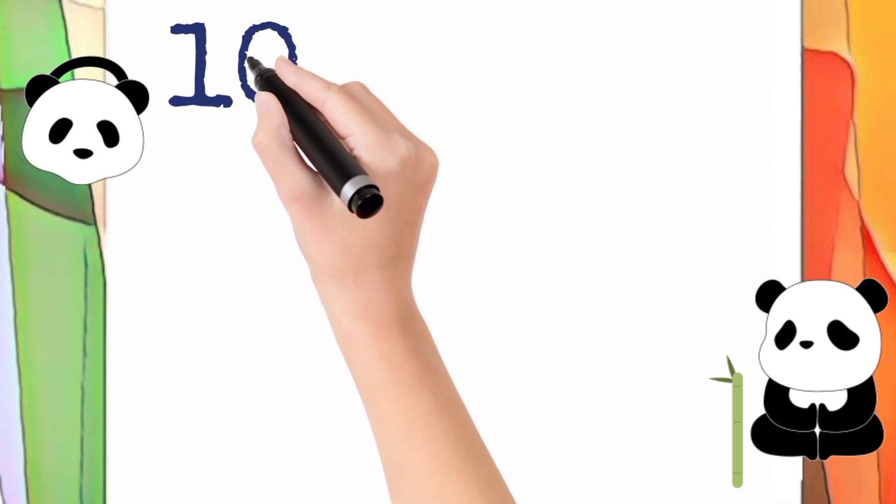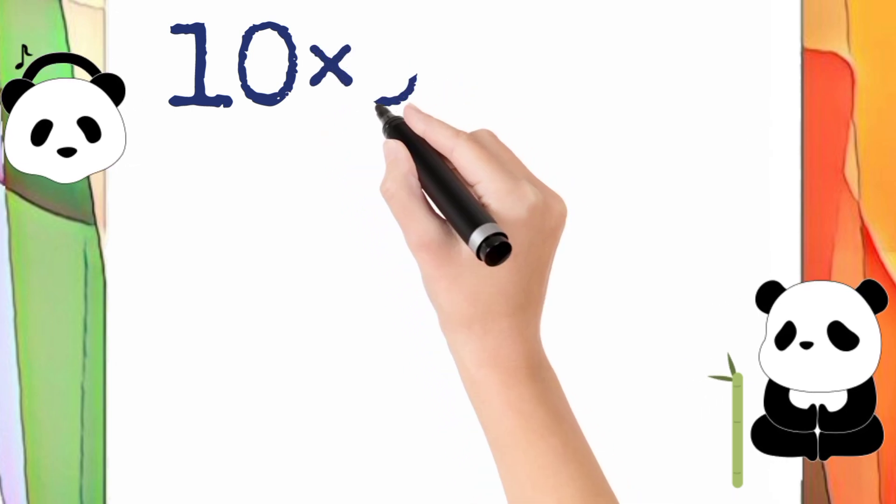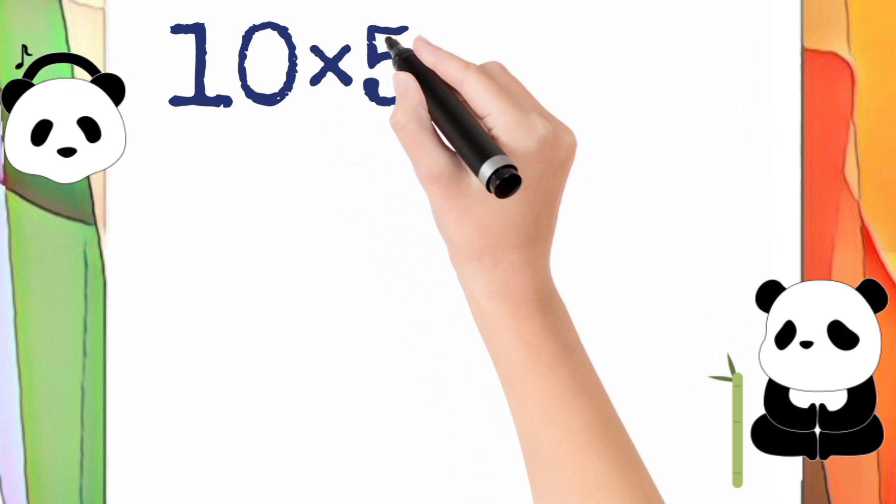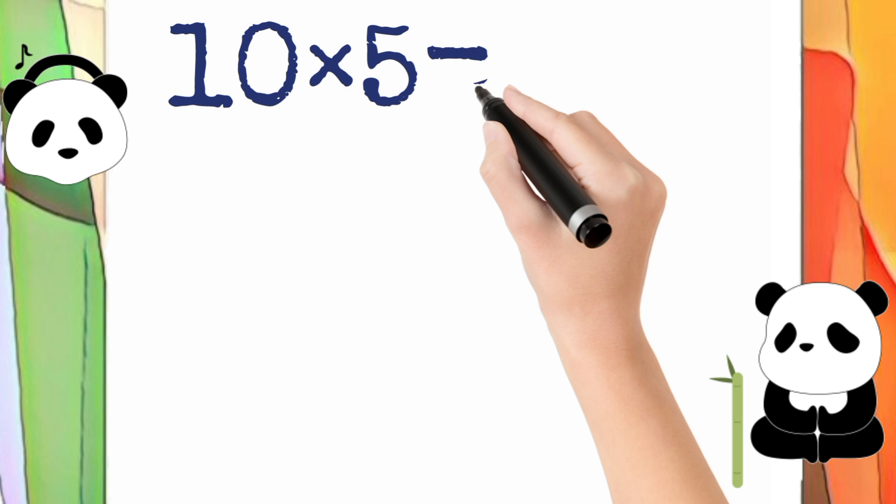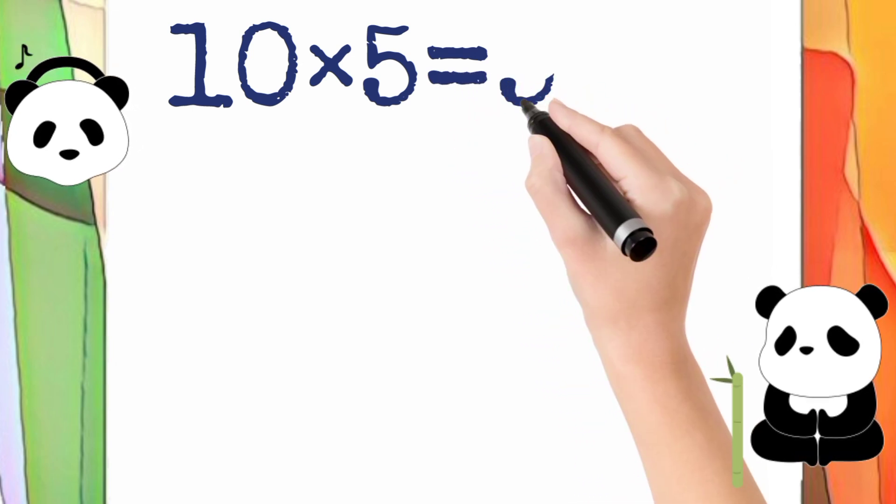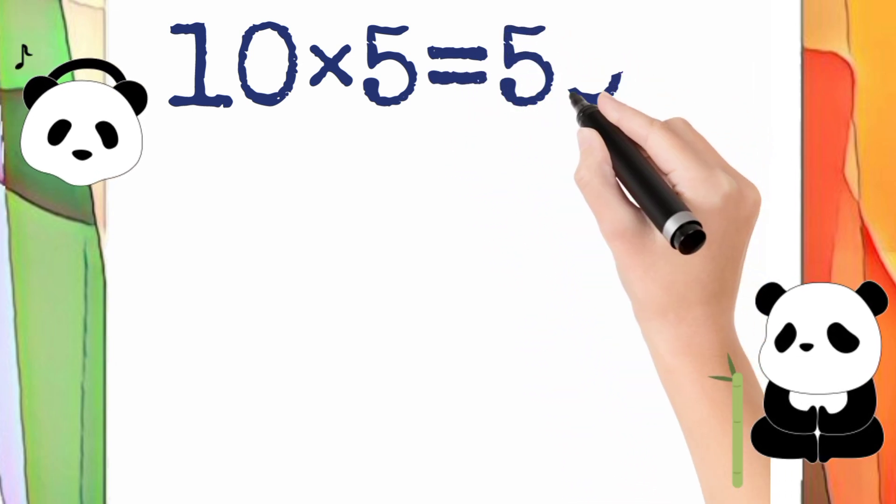10 multiply by 5 is equal to 50. So 10 times 5 equals 50.